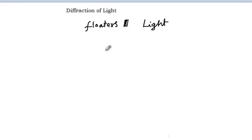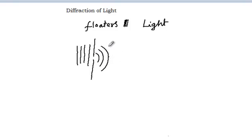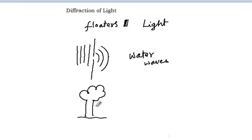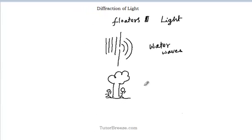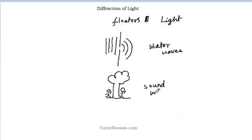An example of diffraction of water waves: if you have plane waves coming in and there is some obstacle with a narrow opening, the water waves will move into a region where you would normally not expect them to reach — they get diffracted. For sound waves, if your friend stands behind a tree and shouts out to you, you can hear them because sound has gone around the tree — demonstrating the diffraction of sound waves.